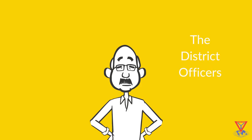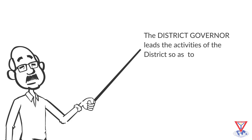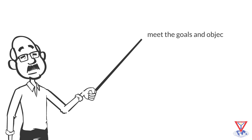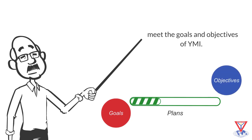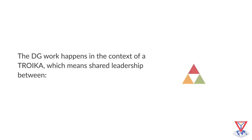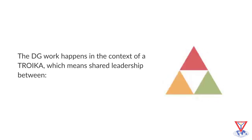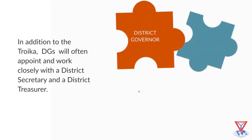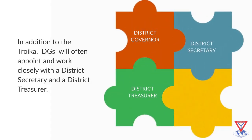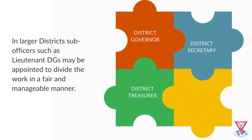The district officers. The district governor leads the activities of the district so as to meet the goals and objectives of YRMI. The DG work happens in the context of a TRIKA, which means shared leadership between IPDG (immediate past district governor), DG (district governor), and DGE (district governor elect). In addition to the TRIKA, DGs will often appoint and work closely with a district secretary and a district treasurer. In larger districts, sub-officers such as lieutenant DGs may be appointed to divide the work in a fair and manageable manner.